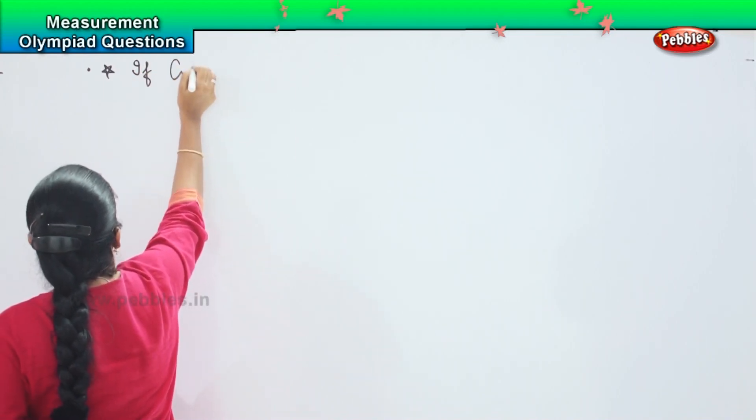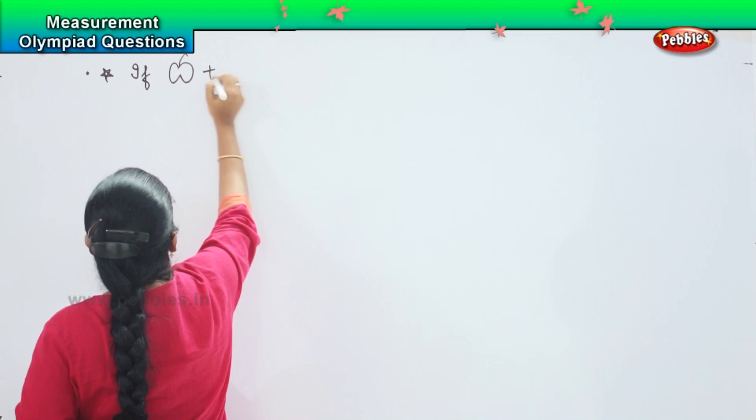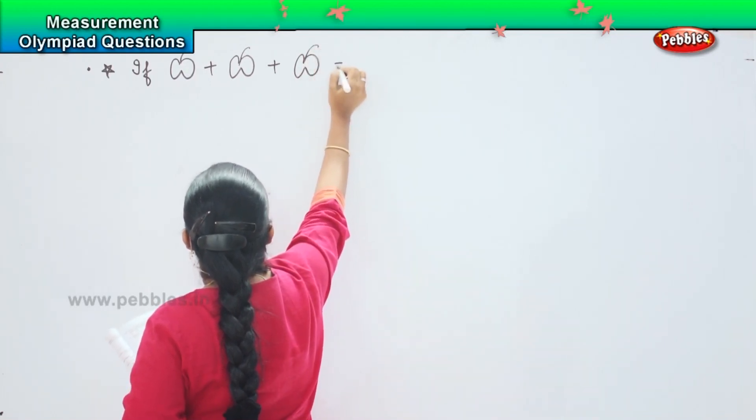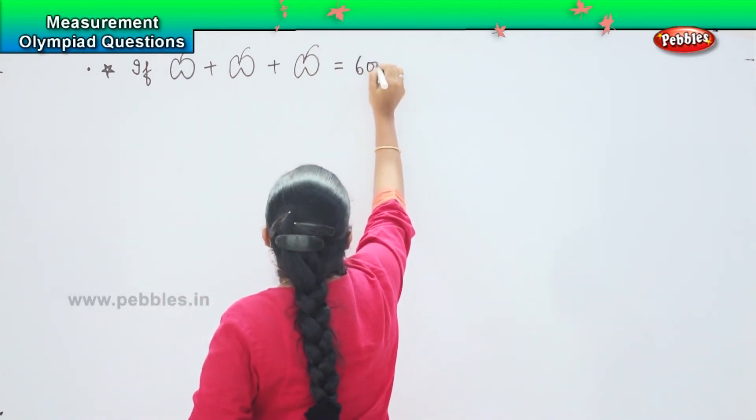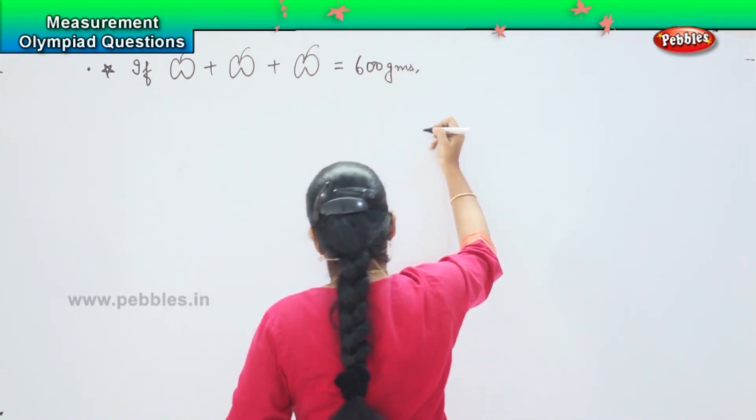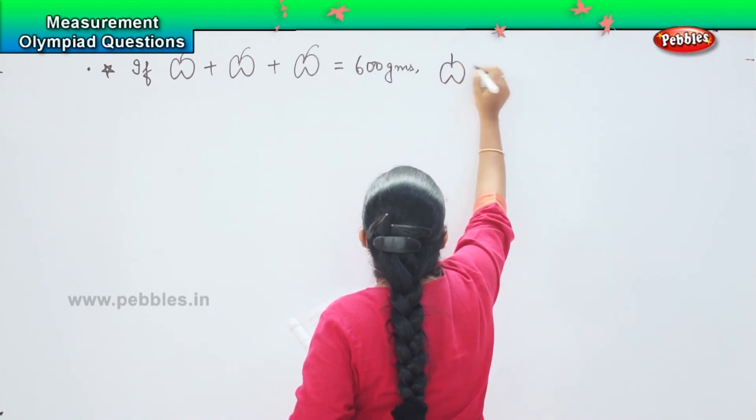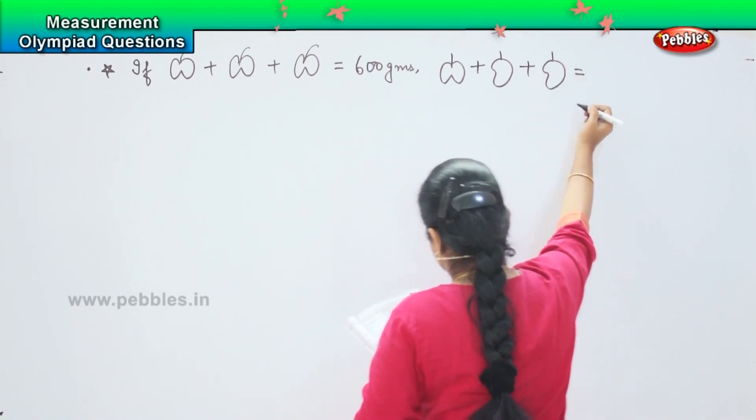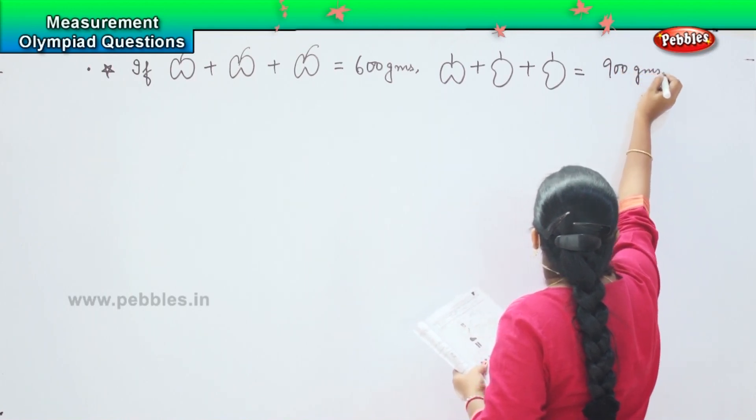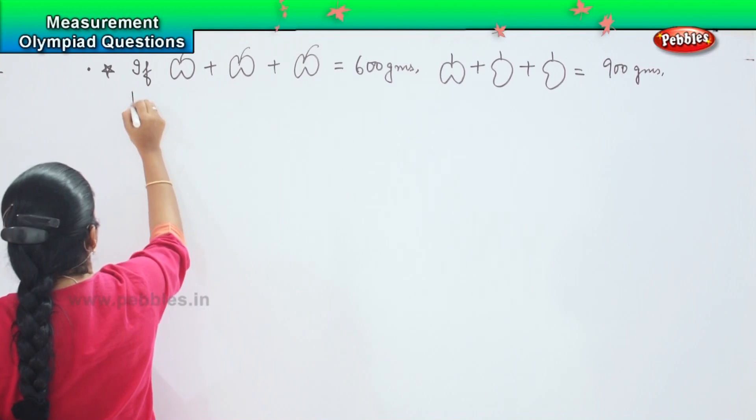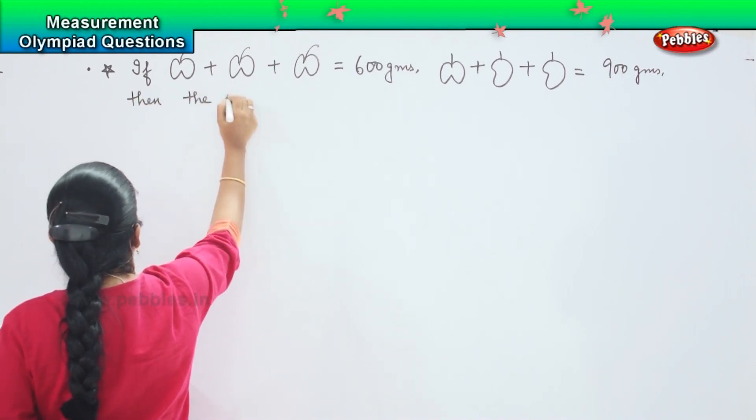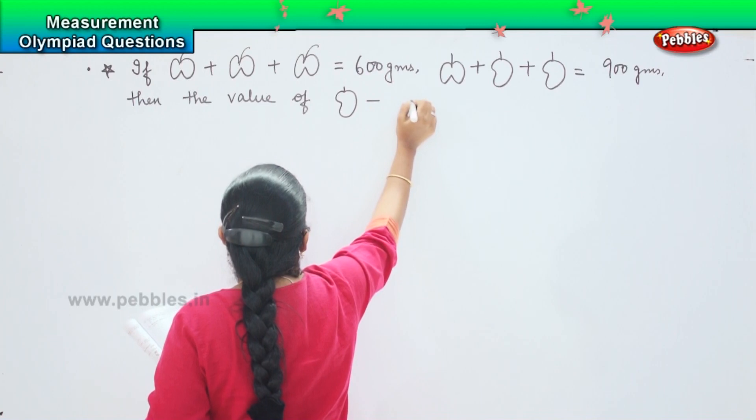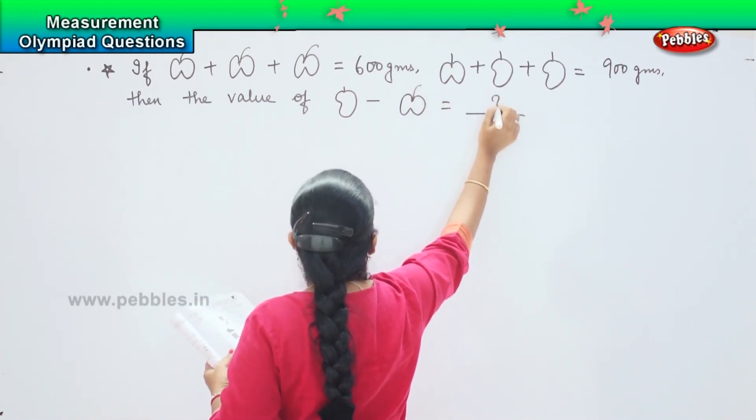If three apples equals 600 grams, and one apple plus two mangoes equals 900 grams, then the value of mango minus apple is equal to what?